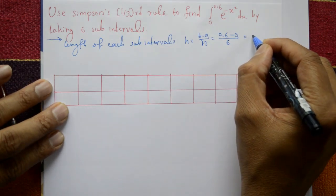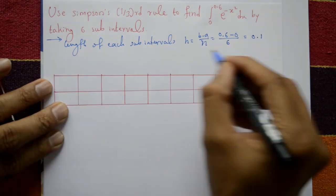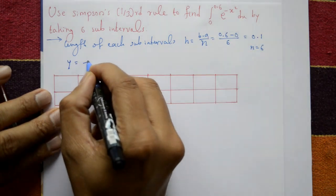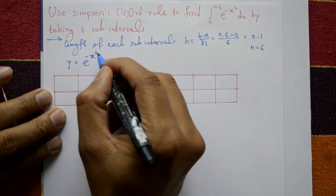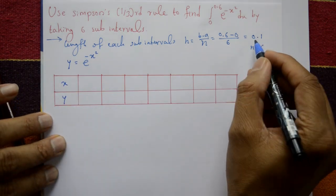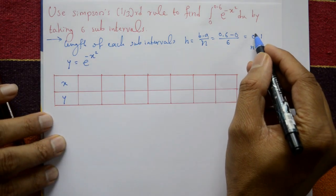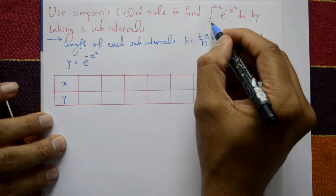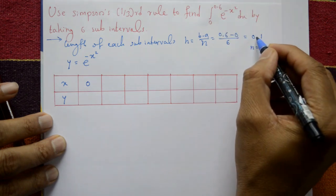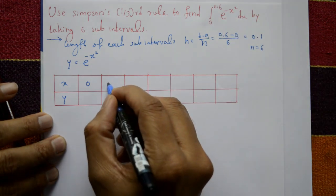This gives h = 0.1 and n = 6. Now y is given: y is equal to e to the power minus x squared. The points have equal length 0.1. First is 0, up to 0.6, with width 0.1 increments.